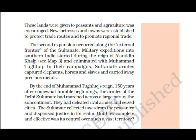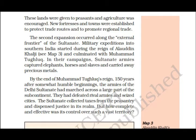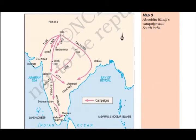The Sultanate collected taxes from the peasantry and dispensed justice in its territories, which helped grow its wealth. But how complete and effective was its control over such vast territory? As you can see in the map, a large area was under the Delhi Sultans — the area Alauddin Khilji campaigned into, including South India. Many constructions also took place during this period.